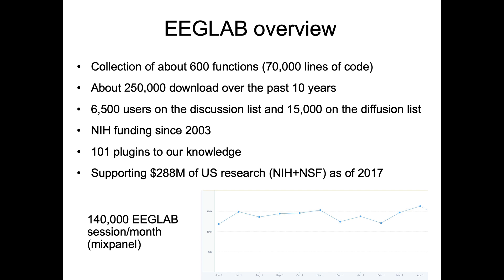EEGLAB is a collection of about 600 functions and 70,000 lines of code. There are about 250,000 downloads over the past 10 years. We have 6,500 users on the discussion list and 15,000 on the diffusion list, which is for more rare messages. We have had NIH funding since 2003. There are about 100 plugins right now, and EEGLAB has been supporting about $288 million of research in the US.